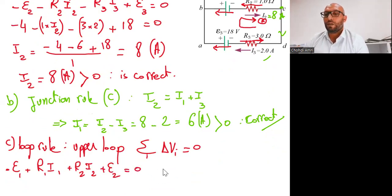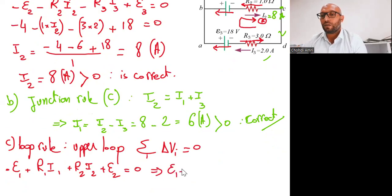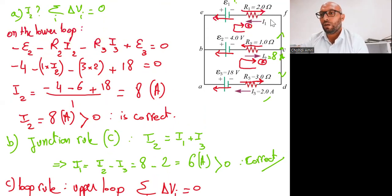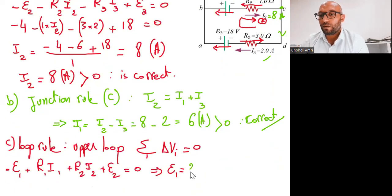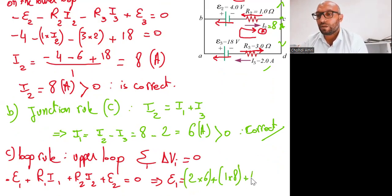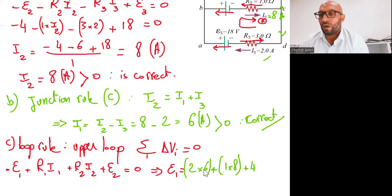Solving for epsilon 1, we substitute the numbers. R1·I1 is 2 times 6. R2·I2 is 1 times 8. Epsilon 2 is 4. So epsilon 1 equals R1·I1 plus R2·I2 plus epsilon 2, which gives 12 plus 8 plus 4 equals 24 volts.